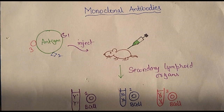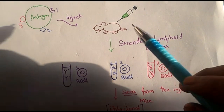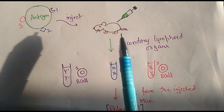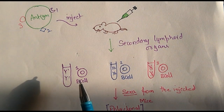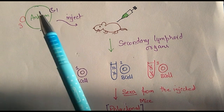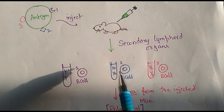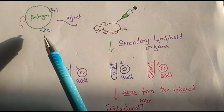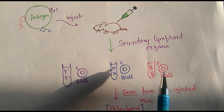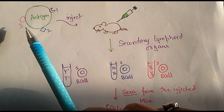There will be formation of B lymphocytes, or B cells. Once the antigen is injected, the mice will produce antibodies and B cells. B cell 1 is producing antibodies against epitope 1, B cell 2 is producing antibodies against epitope 2, and B cell 3 is producing antibodies against epitope 3.